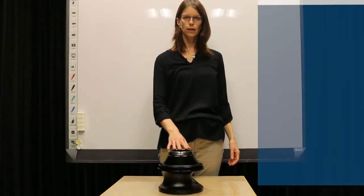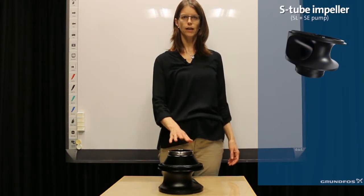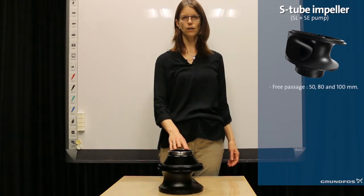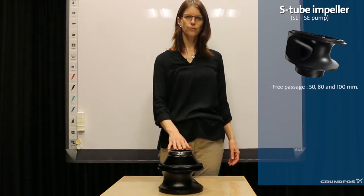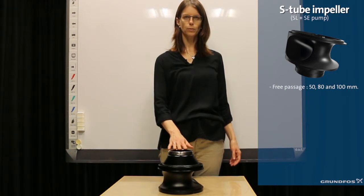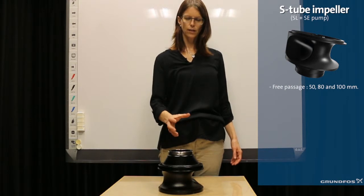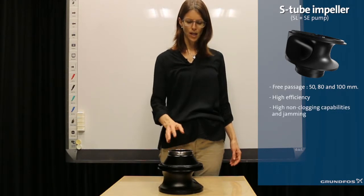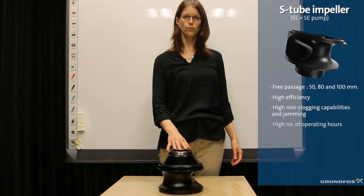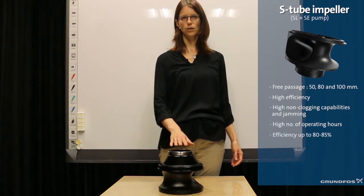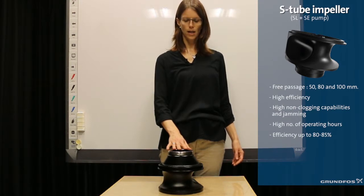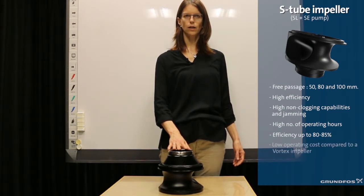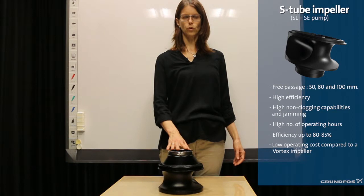Here you see the tube impeller offered by Grundfos. It is a closed impeller available with a free passage of 50, 80 and 100 millimeters. Grundfos has refined the original tube impeller design invented in the 1980s, achieving very high efficiency and very good non-clogging capabilities. This impeller is ideal when the operating hours of the wastewater system are high, because you can obtain a hydraulic efficiency of up to 80 to 85 percent, which means significantly reduced operating costs compared to a vortex impeller.